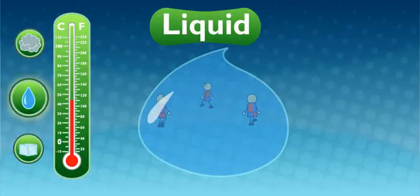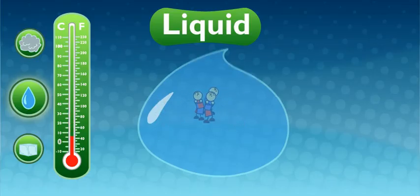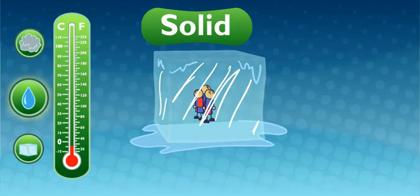Now, let's drop the temp even more. When the temperature hits 32 degrees Fahrenheit, that means freeze. This is called the freezing point. Not much room to move when you're frozen together. Right.